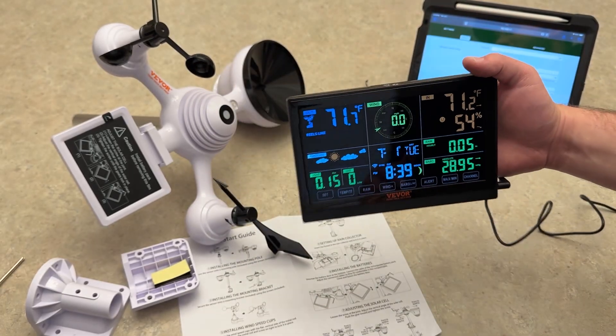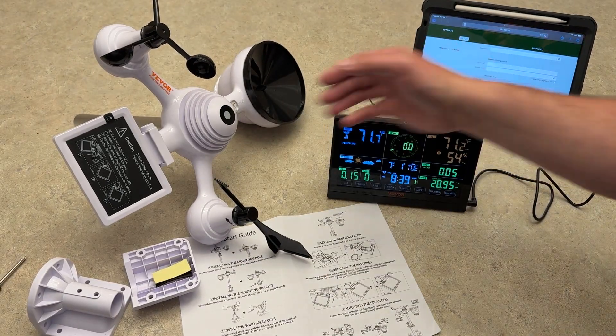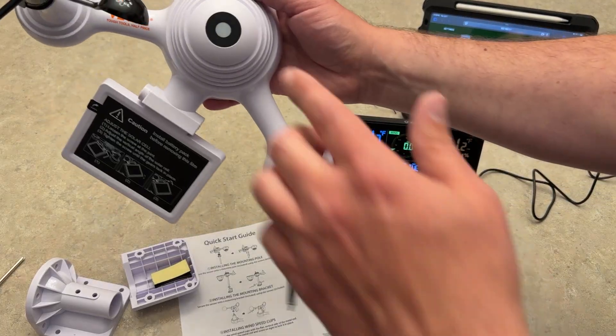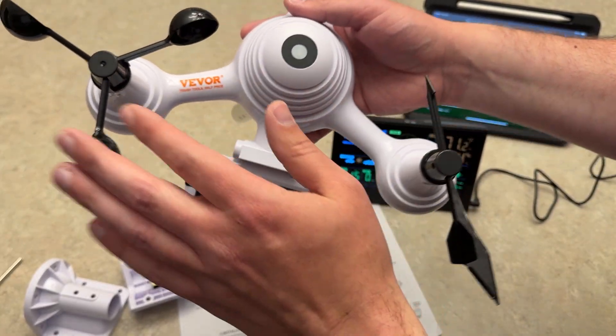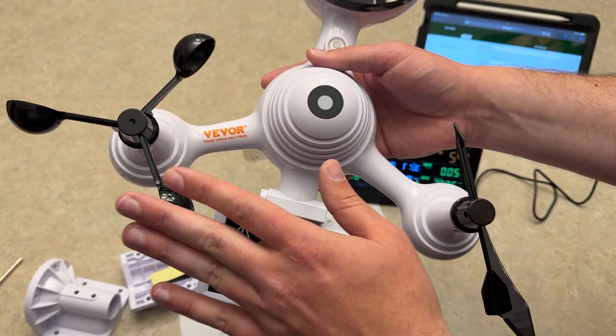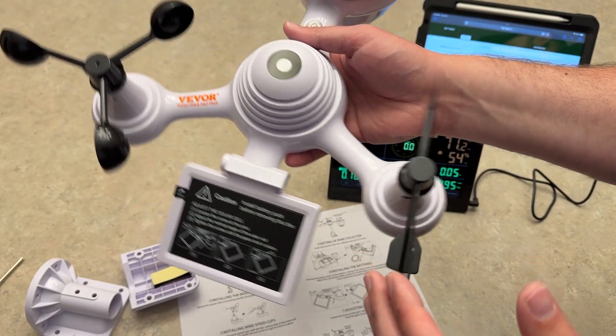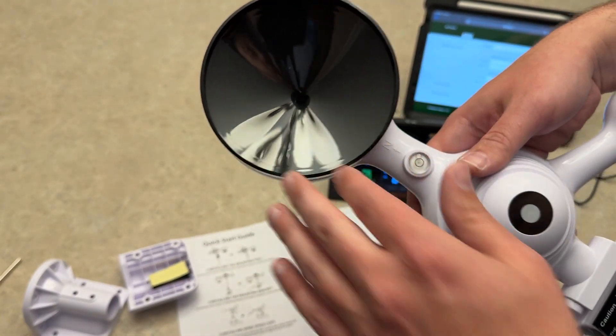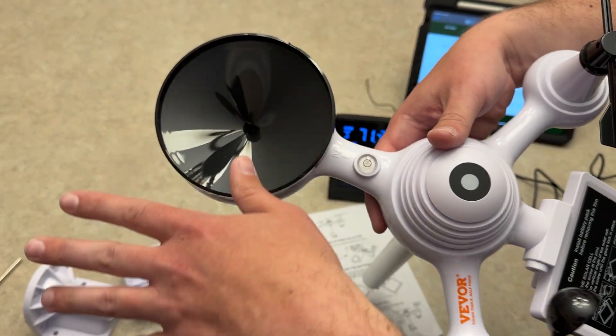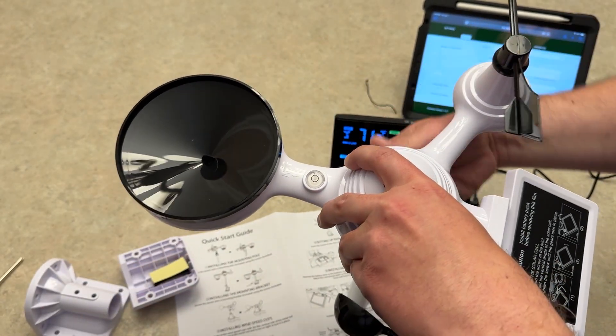You also have different sensors in this thing. So you have your UV light sensor on top here. This is your wind cup, so this will detect the wind. You have the wind direction, and your rain cup here as well. The rain cup will have to point north, so make sure you point north on that.